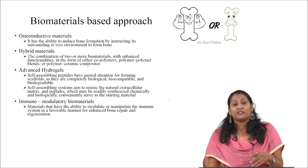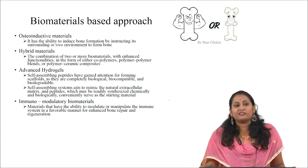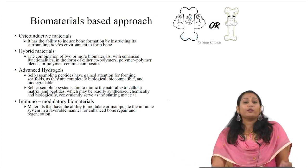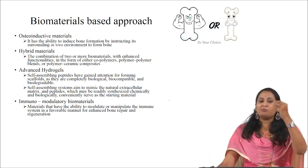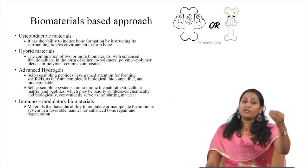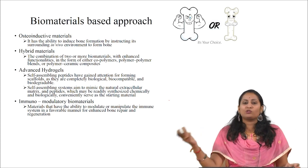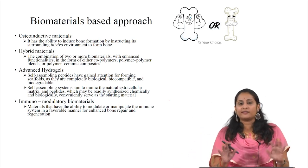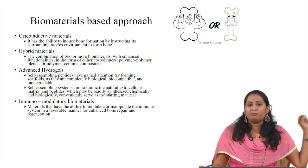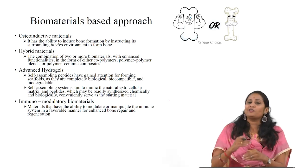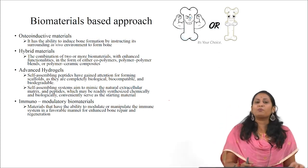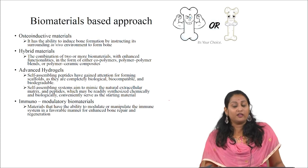Regarding the evolution of biomaterials: in the 1970s, the first generation biomaterials were developed. They were developed with the idea of mimicking tissue which got damaged due to physical reasons — due to fracture, disease, or any other trauma. They are bioinert materials and they do not interact with the biology of the host organism. First generation materials are called bioinert materials. For example, stainless steel and its alloys come under bioinert materials.